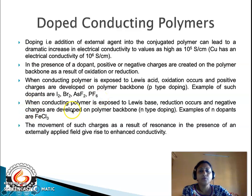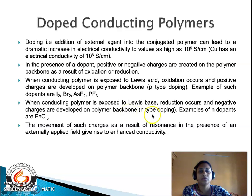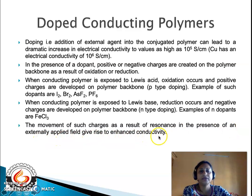When the conjugated polymer is exposed to a Lewis base, reduction occurs — gain of electrons — and negative charges are developed on the polymer backbone. This is called n-type doping. An example of an n-type dopant is ferric chloride. The movement of charges as a result of resonance in the presence of an externally applied field gives rise to enhanced conductivity.